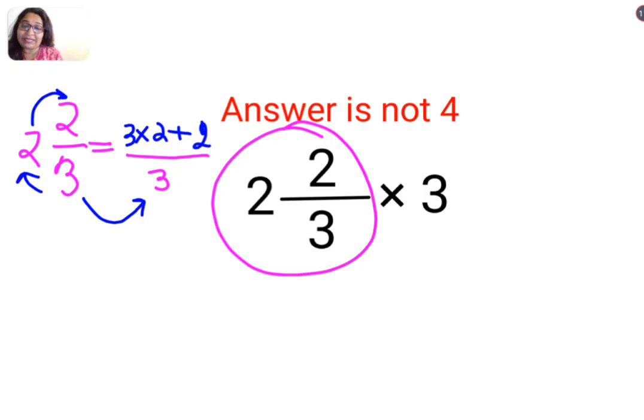So basically this becomes 6 plus 2 that is 8 divided by 3 multiplied by 3. So this and this gets canceled. So the answer for this question is supposed to be just 8.